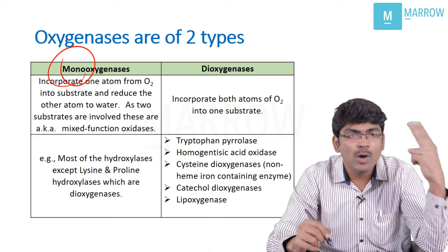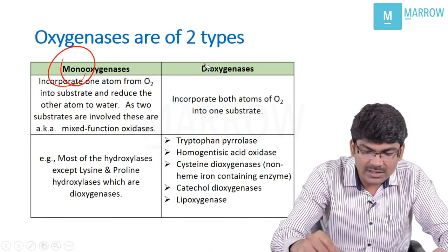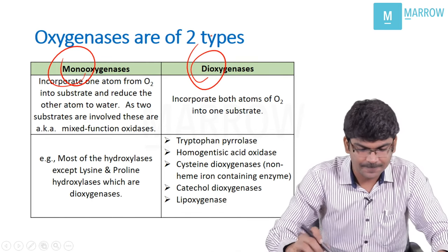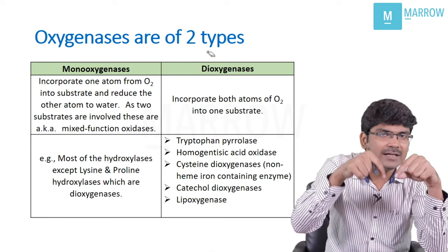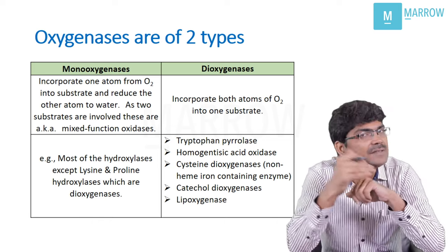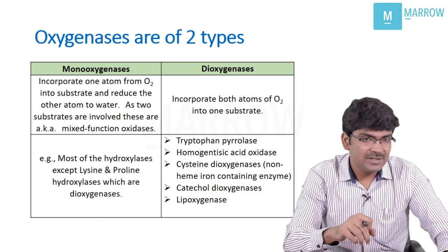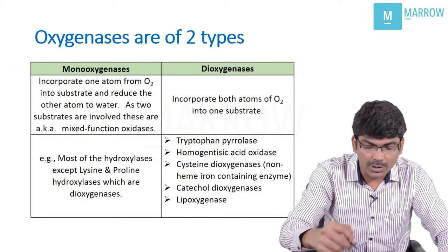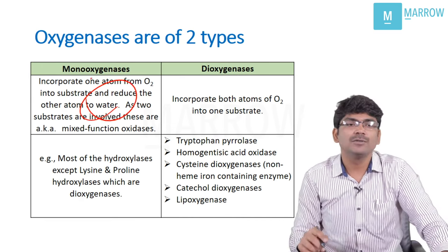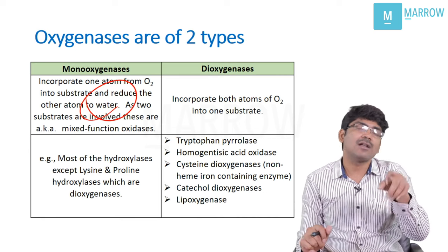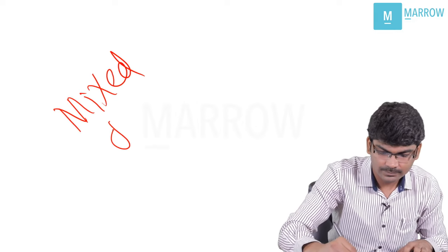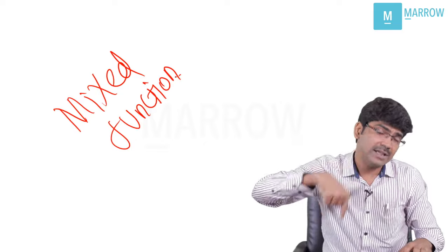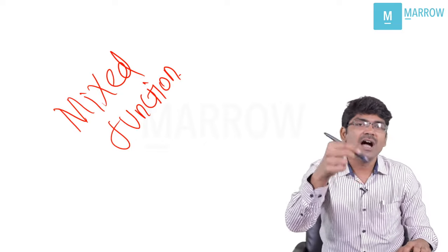Now let us understand monooxygenases. Mono means one oxygen is incorporated into the substrate; di means two oxygens are incorporated. In an oxygen molecule there are two oxygen atoms. If you incorporate one oxygen atom into the substrate, what happens to the other oxygen? These enzymes incorporate the other oxygen to hydrogen to produce water. That is why monooxygenases are also known as mixed function oxidases — they incorporate one oxygen atom into the substrate and the other oxygen atom into hydrogen to produce water.